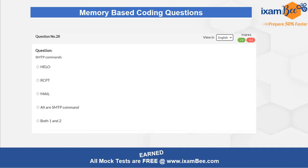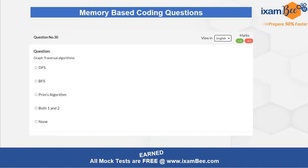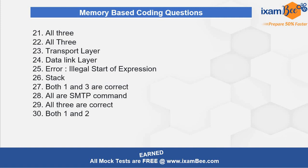The eighth question is related to SMTP commands. SMTP is a protocol used in email services, and you have to check the correct answer for the commands used with SMTP. The ninth question is related to aggregate functions in SQL — what they are used for, as described in the options. The last question is related to graph traversal algorithms — which algorithms can be used for graph traversal is what you have to pick as the answer.